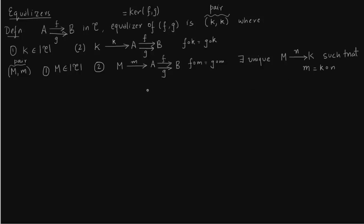Let us write this in diagrammatic form. We start with K going to A, then there are two arrows F and G out of A. We also have M here with small m, and this is the unique arrow N we were talking about.